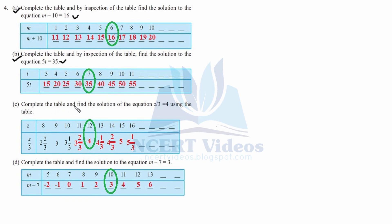For part c: complete the table and find the solution to z divided by 3 equal to 4. Placing z equal to 8: 8 divided by 3 is not 4. Placing 9: 9 divided by 3 is 3, not 4. Placing 10: gives 3 and a fraction. Placing 11: similarly not a desired solution. But placing 12: 12 divided by 3 equals 4. Therefore 12 is the solution for z divided by 3 equal to 4.